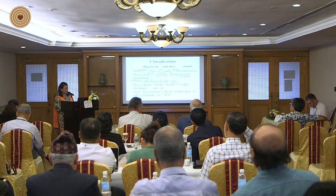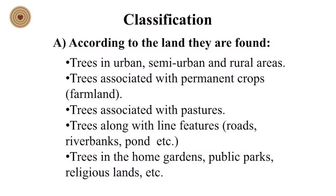There are different classifications of trees outside forest. The main classification is on the basis of the land where they are found: trees in urban, semi-urban and rural areas; trees associated with permanent crops; trees associated with pastures; trees along line features such as roads, river banks and ponds; and trees in home gardens, public parks and religious lands.